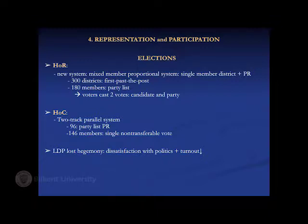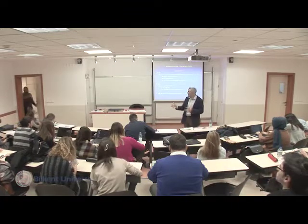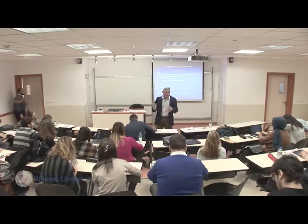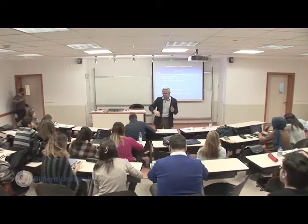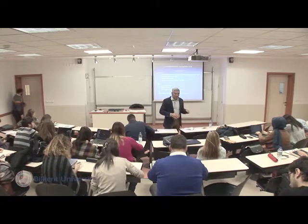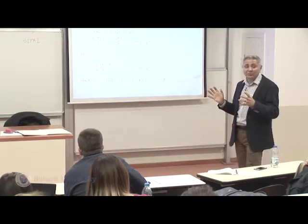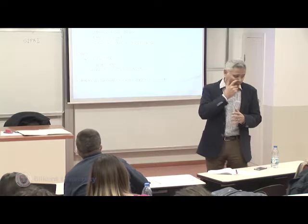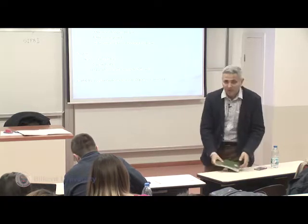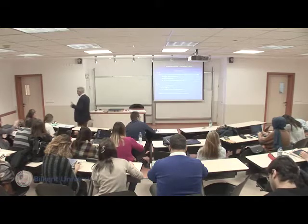The House of Counselors uses a two-track parallel system: 96 party lists based on proportional representation, and another 146 members elected by single non-transferable vote. So part of it is proportional representation and part of it is single member district plurality system. The LDP had been losing its hegemony starting from the early 1990s.